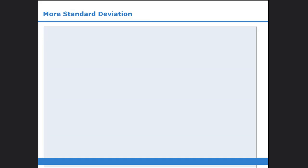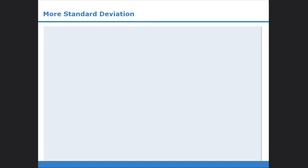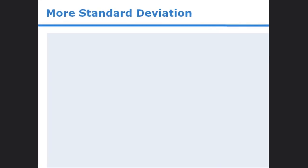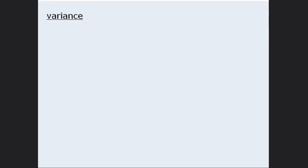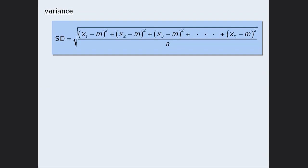In this lesson, we will examine two concepts related to standard deviation. The first concept is variance. Variance is closely related to standard deviation. When we calculate the standard deviation of a set of numbers, the variance of that set is equal to the value inside the square root.